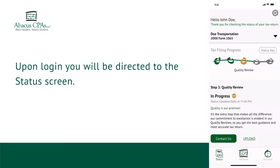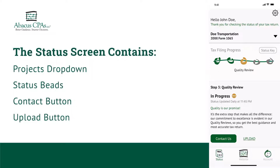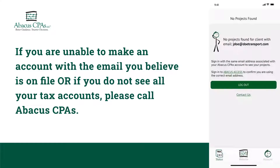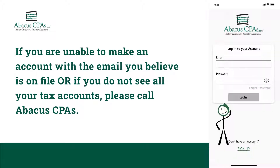Upon login, you will be directed to the Status screen. The Status screen contains a Projects drop-down, Status Beads, a Contact button, and an Upload button. If you are unable to make an account with the email you believe is on file, or if you do not see all your tax accounts, please call Abacus CPA's.